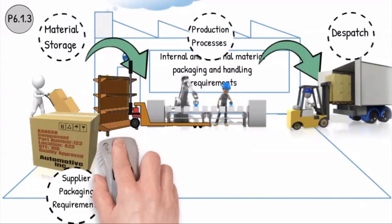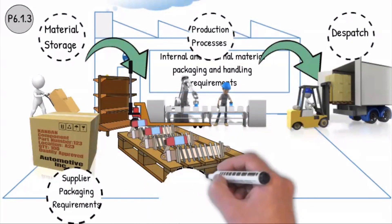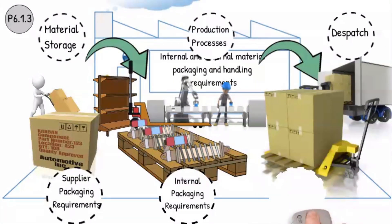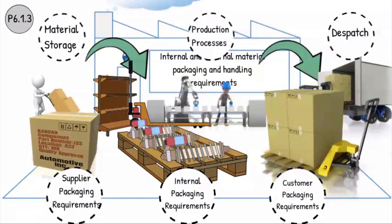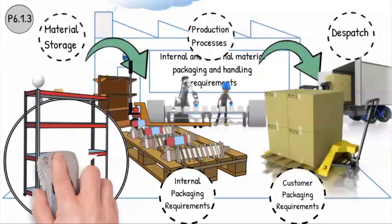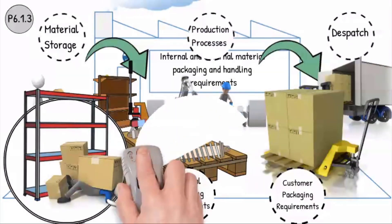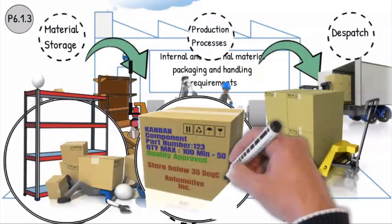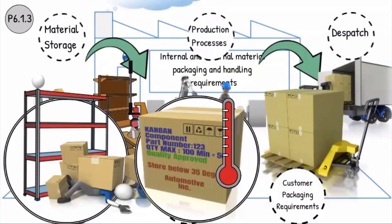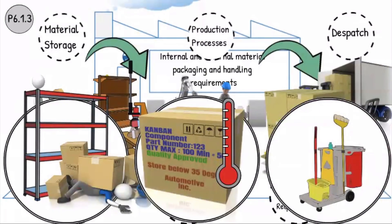All packaging requirements related to the customer, the supplier and internal use must be taken into account and implemented throughout all the production processes. The supply of components and parts at the workstation and on the assembly line must allow for safe handling. Specified maximum and minimum storage times and use-by dates for special materials and components must be monitored by appropriate methods. 5S should be implemented and monitored.